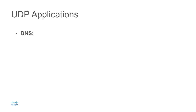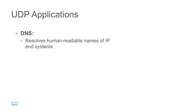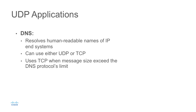Another protocol is DNS, the Domain Name System, which resolves IP addresses from human-readable names. For example, www.cisco.com has an IP address associated with it, and when we type cisco.com into a web browser, DNS works in the background to figure out the correct IP address. DNS can use either TCP or UDP — for name resolution it uses UDP in most cases, which is faster because there's no three-way handshake or reliability mechanisms. However, if a message size exceeds the DNS protocol's limit and reliable service is needed, DNS can use TCP.